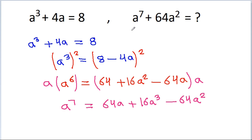Now we have to find the value of a to the power 7 minus 64a squared, and here we have a to the power 7 and here we have 64a squared.